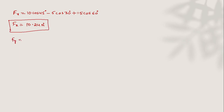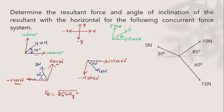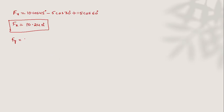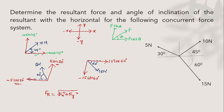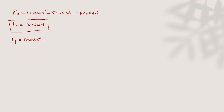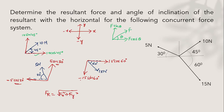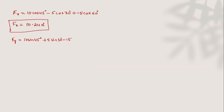Now for FY: we have 10 sin 45° (upward, positive), plus 5 sin 30° (upward, positive), minus 15 sin 60° (downward, negative). So FY = 10 sin 45° + 5 sin 30° − 15 sin 60°. Substituting all values, FY comes out to be minus 3.41 Newton.